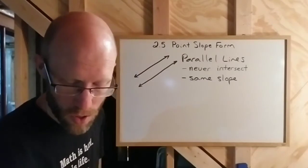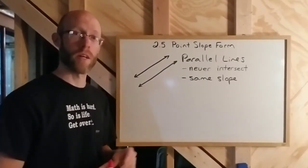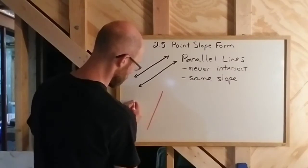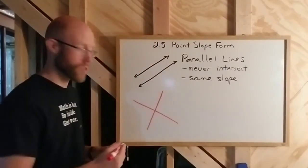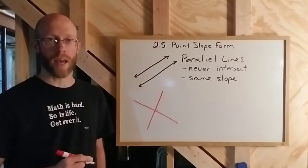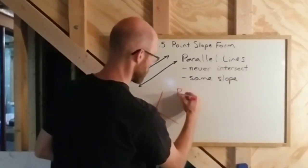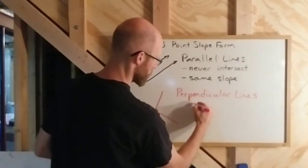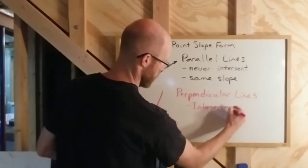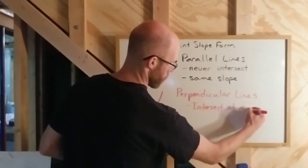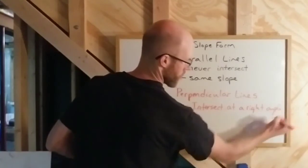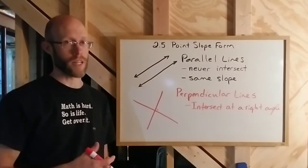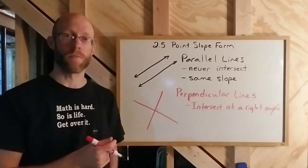The other type of line we'll talk about is called perpendicular lines. Perpendicular lines are quite a bit different in the fact that they do intersect. And not only do they intersect, but they intersect at a 90-degree, or right, angle. That's the definition of perpendicular lines — they do intersect, and it has to be a right angle.